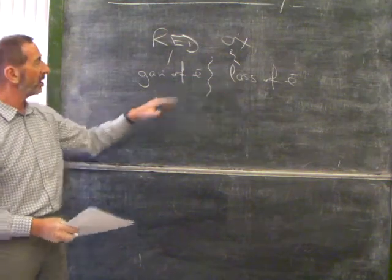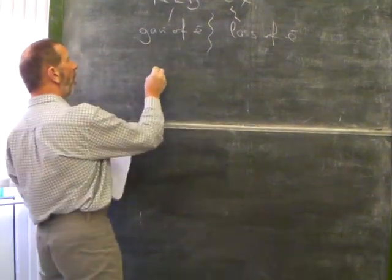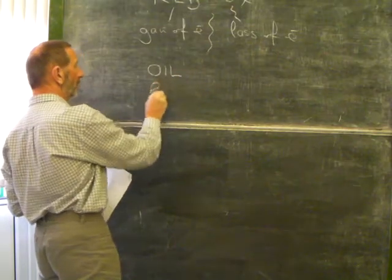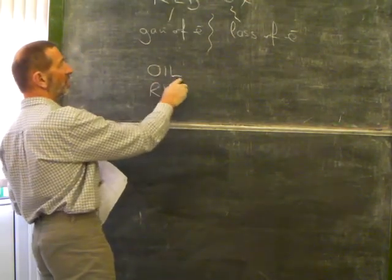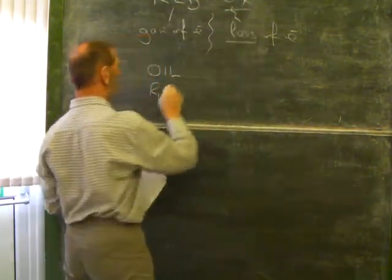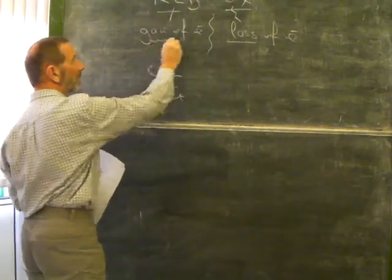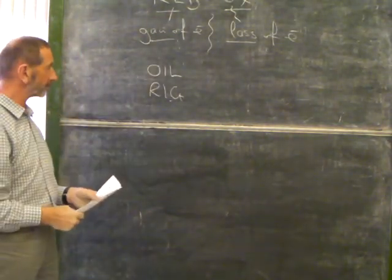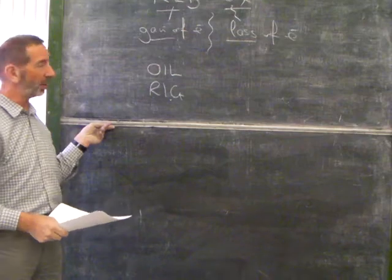Once something loses electrons, the other one gains. You might remember OIL RIG. Oxidation is loss. Reduction is gain. You have to get it the right way around. So really, as an idea goes, not bad at all.